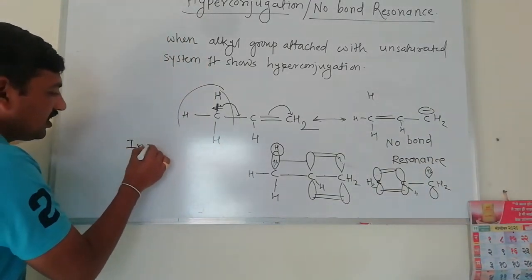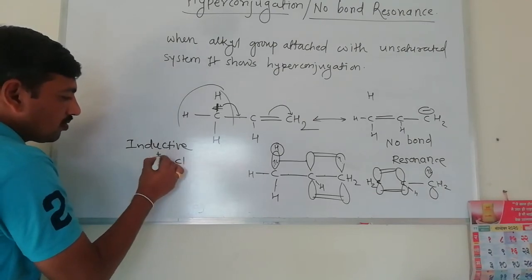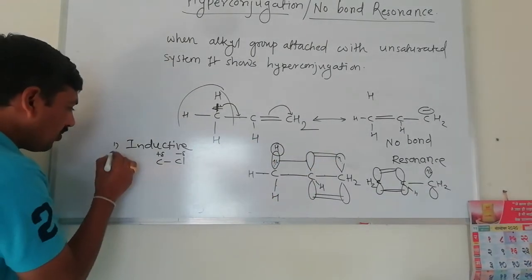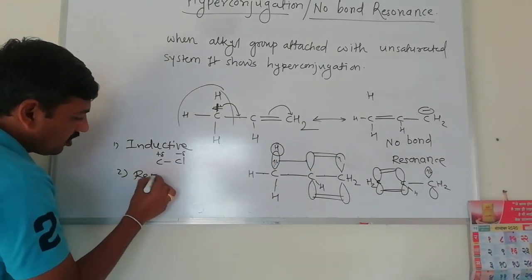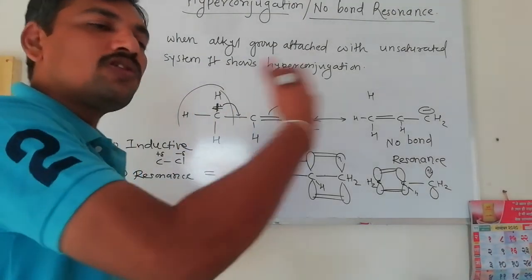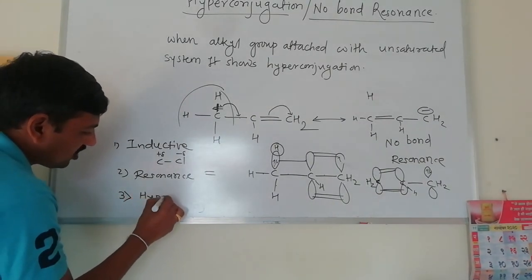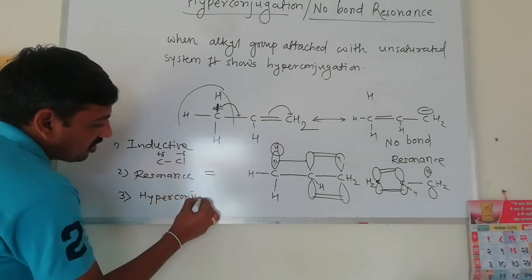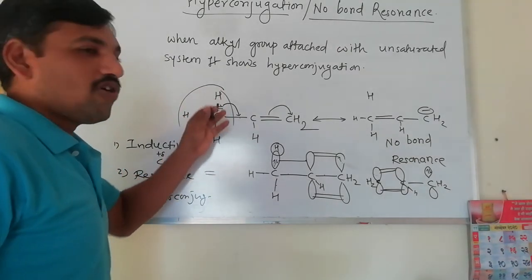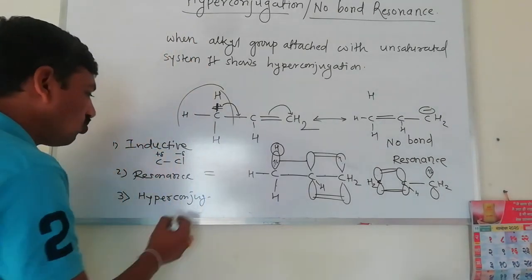To summarize the three types of effects: the inductive effect involves partial polarity in the sigma bond; the resonance effect involves pi electron transfer; and hyperconjugation involves alkyl groups attached to an unsaturated system — a double or triple bond — where the C-H bond of the alkyl group is directly involved in conjugation, also called no bond resonance.